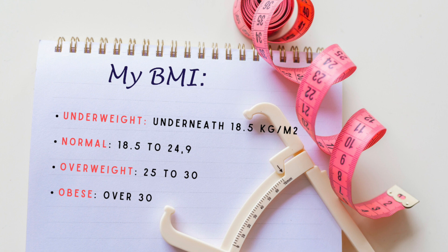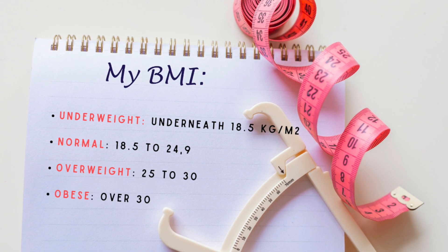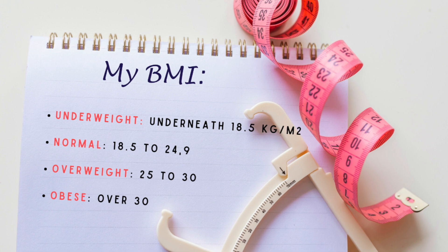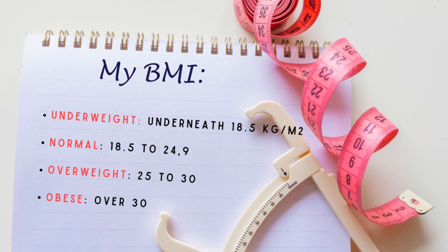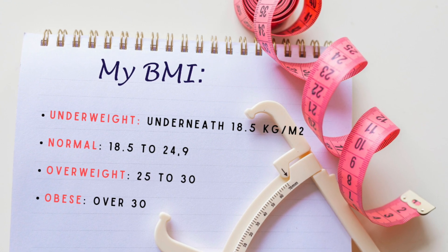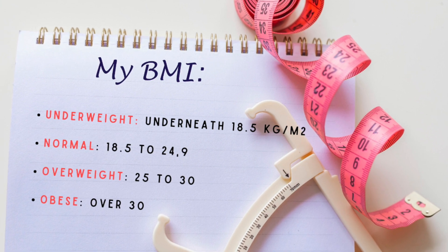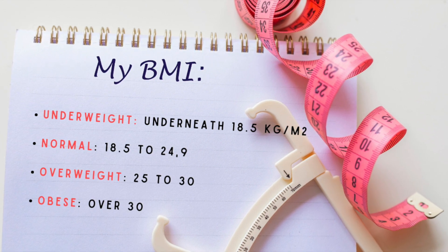BMI is based on tissue mass — muscle, fat, and bone — as well as height. The standard BMI ranges are: underweight is below 18.5, normal is 18.5 to 24.9, overweight is 25 to 30, and obese is over 30.